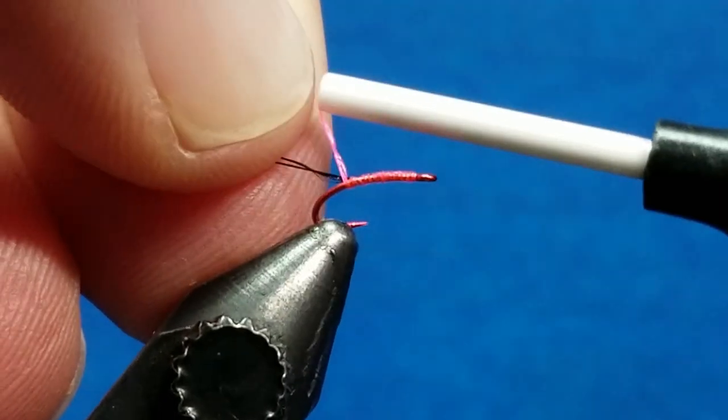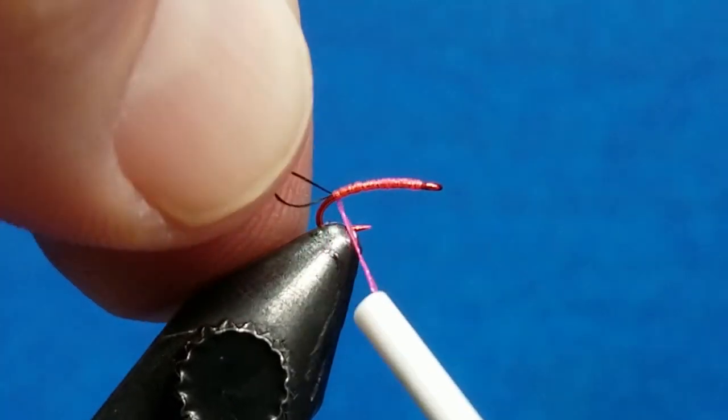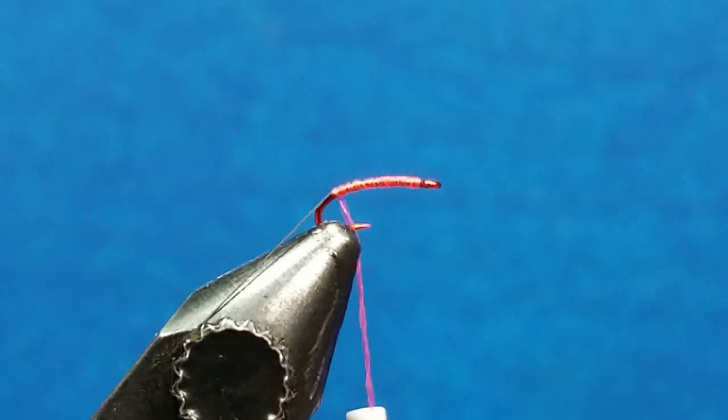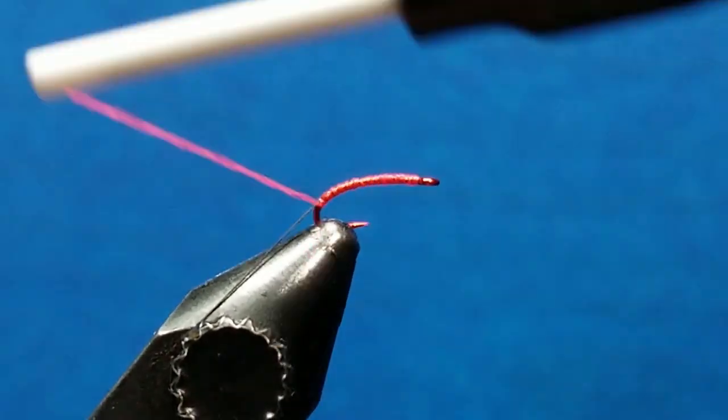I'm going to try to keep it on the far side of the hook shank as I tie this in, just take a few wraps, and let that bobbin hang. Just snip that tag end off and take another couple more wraps until we start to work our way down the hook bend.